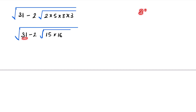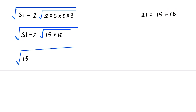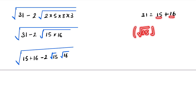We split 15 times 16, and notice that 31 can be written as 15 plus 16. So we now write: 15 plus 16 minus 2 into under root 15 into under root 16.